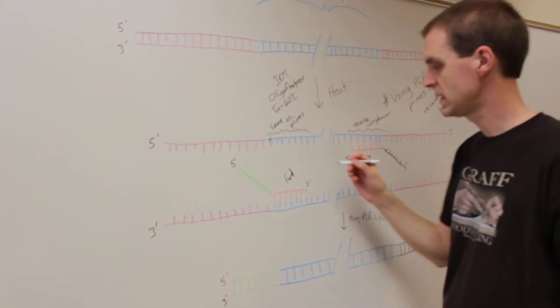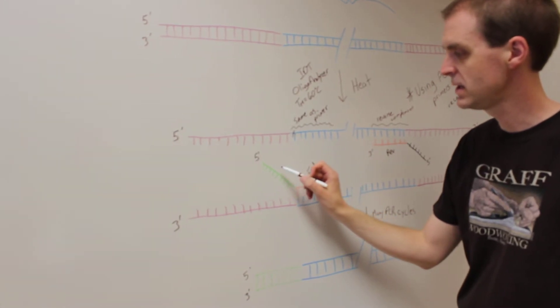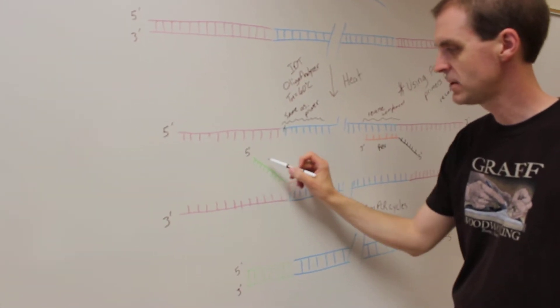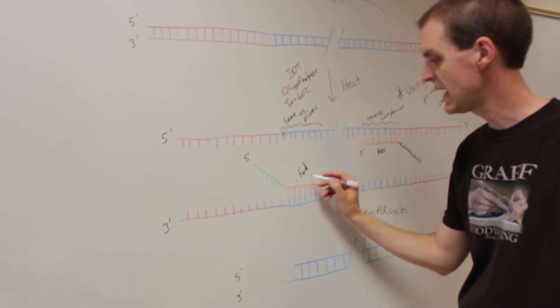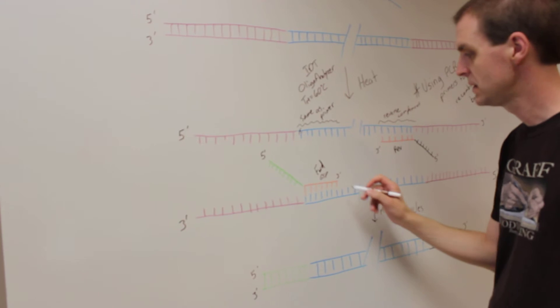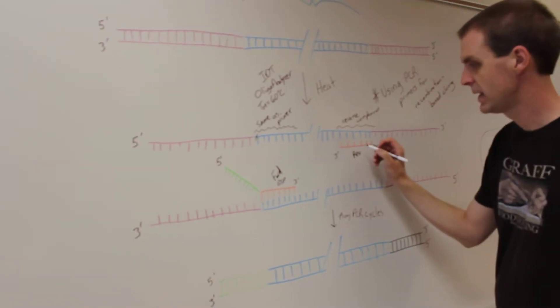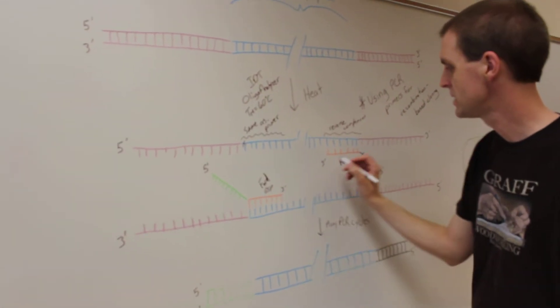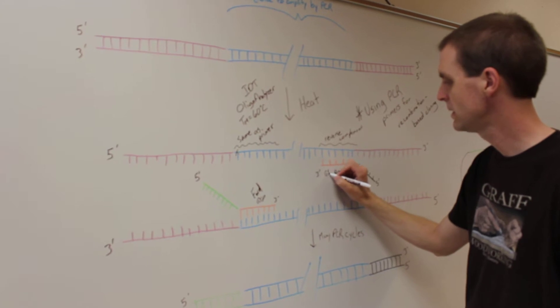The main difference in this experiment, or in these primers, are that the primers have two different components to it. You still have what I call the gene-specific portion to it, there in orange and also here in orange.